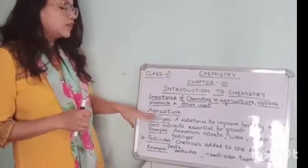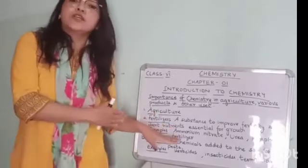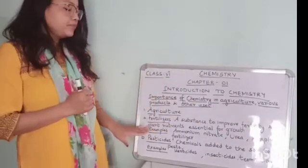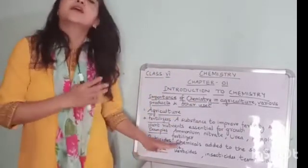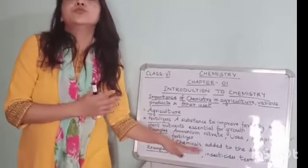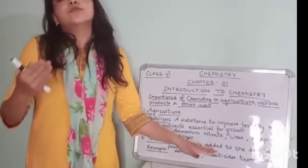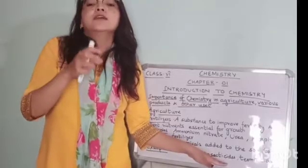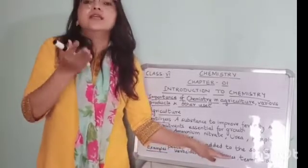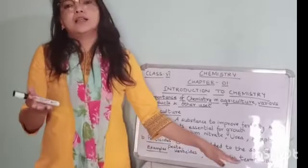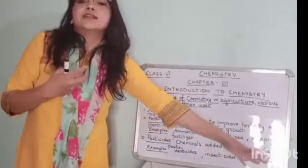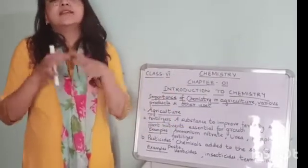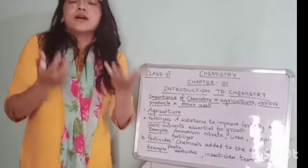Examples of fertilizers are ammonium nitrate, urea, and phosphatic fertilizers. Examples of pesticides include herbicides — chemicals used to kill or inhibit growth of unwanted plants — and insecticides, which are sprayed on plants to kill harmful insects. Termiticides are chemicals sprayed on termites, which are also insects harmful to plant growth.